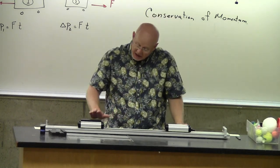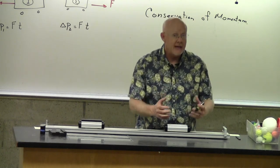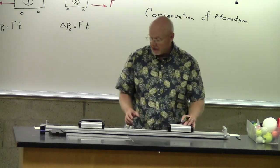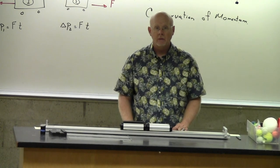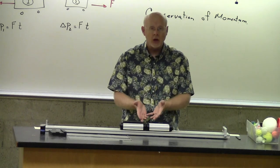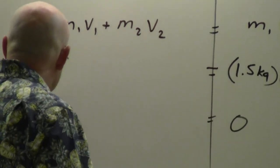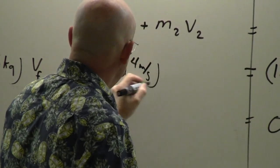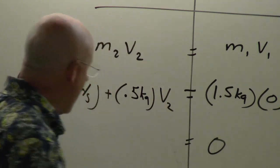Putting in the numbers: 1.5 kilograms times 4 meters per second from the first cart, and 0.5 kilograms times the unknown speed for the second cart. Their momenta are equal and opposite, so they sum to zero before the collision and zero after. The second cart must have a speed of 12 meters per second in the negative direction before the collision.